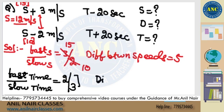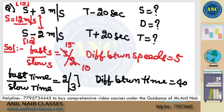Difference is 1. Observe the question. If I observe the question, difference between time is nothing but 40 seconds. Difference is 1. So multiply by 40.